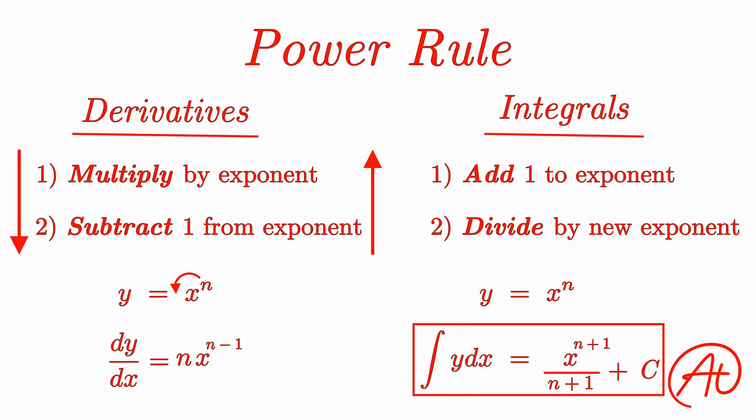Now, once again, we can verify that we are right by taking the derivative of this result. Taking the derivative of our answer, we would multiply by n plus 1, which cancels with the bottom, and subtract 1 from the exponent to get the original function of x raised to the nth power.